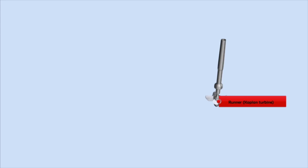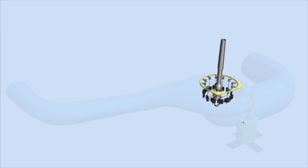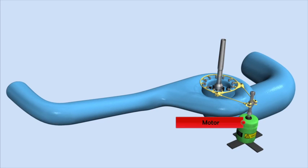The runner of a Kaplan turbine looks like a propeller or the screw of a ship. Adjustable pitch vanes enable it to work efficiently over a range of flow rates. The pitch vanes are driven via an electric motor.